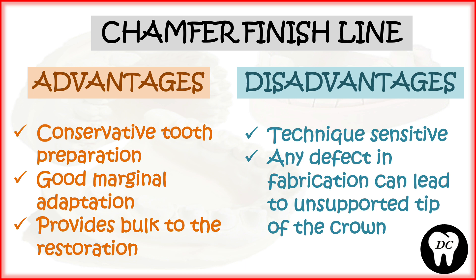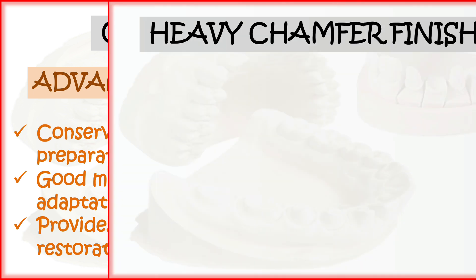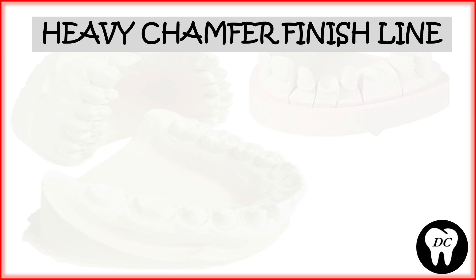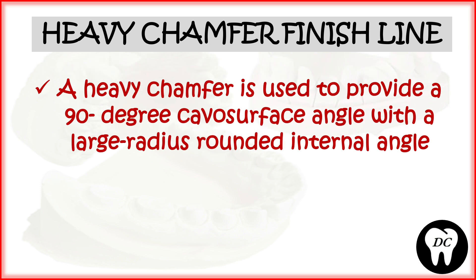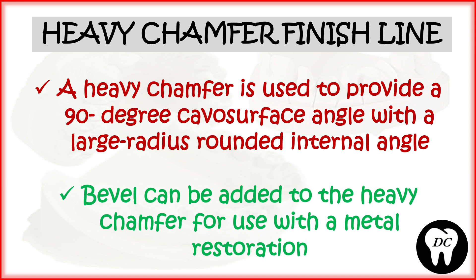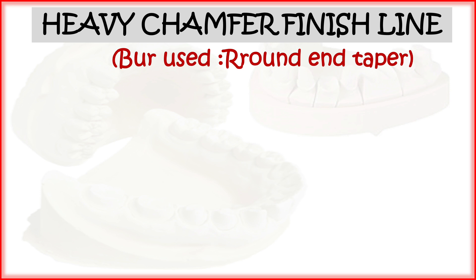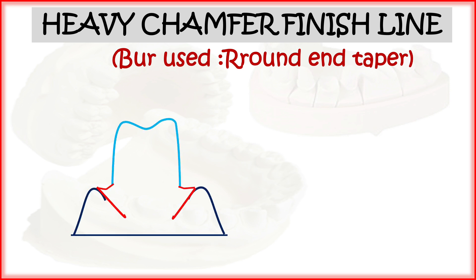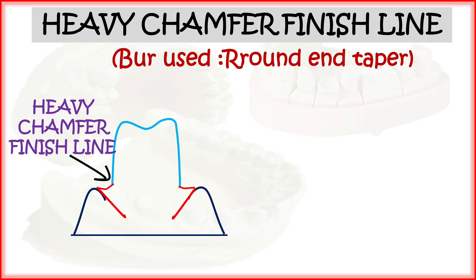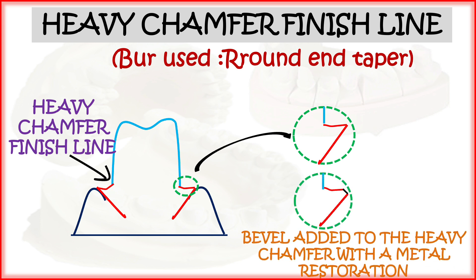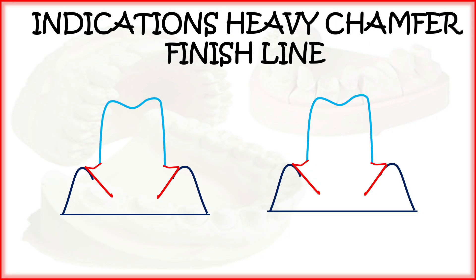Disadvantages of chamfer finish line: it is technique sensitive, and any defect in fabrication can lead to an unsupported tip of the crown. The heavy chamfer provides a 90-degree cavo-surface angle with a large radius rounded internal angle, and a bevel can be added for use with metal restorations. The bur used is round and taper. Indications include ceramic crowns and metal crowns with bevel.